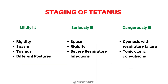Tetanus has three stages. In the mildly ill stage, patients present with rigidity, spasm, trismus, and the various postures. In the seriously ill stage, spasm, rigidity, and respiratory infections appear. In the dangerously ill stage, respiratory infections progress to cyanosis with respiratory failure, and severe tonic-clonic convulsions along with complications such as fractures and joint dislocations occur.